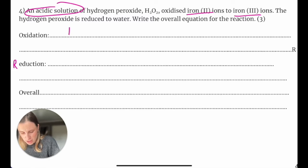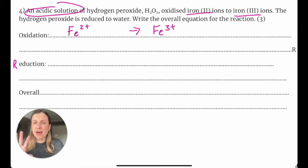So that means that the oxidation is iron 2+, which means Fe2+ going to Fe3+. Notice how I leave gaps in my equations just in case I need to add extra stuff. It's worth just leaving yourself a bit of space.